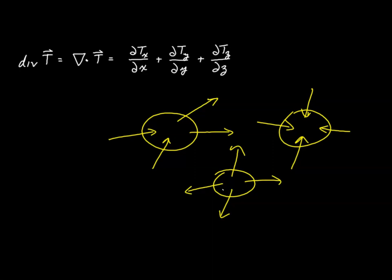The divergence has important applications in things like fluid dynamics. As we measure the flow of an incompressible fluid, we'd expect the divergence to be zero at any given point, because the flow of the fluid into any given area has to equal the flow out at any given period of time. It also has important applications related to electricity, magnetism, and gravitation.